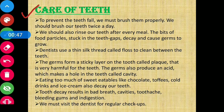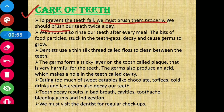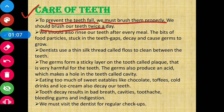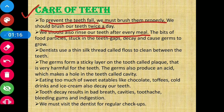How we are supposed to take care of our teeth. To prevent tooth fall, we must brush them properly. We should brush our teeth twice a day. Hamare teeth na girein, uski wajah se humein zaroorat hai ki hum apne teeth ko bahut achhi tarah se brush karein — twice a day. We should also rinse our teeth after every meal; khaane ke baad hume kulla zaroor karna chahiye.